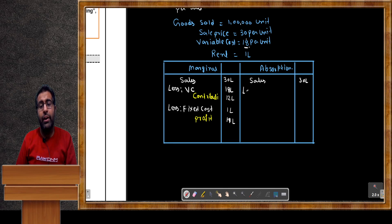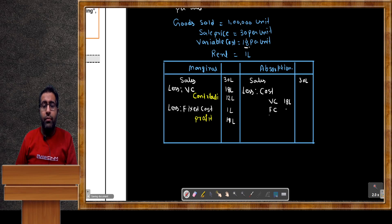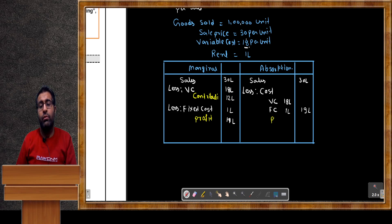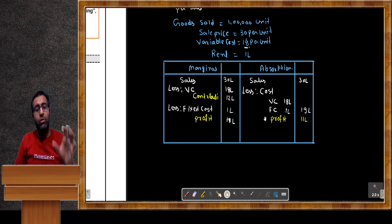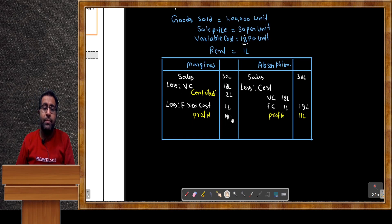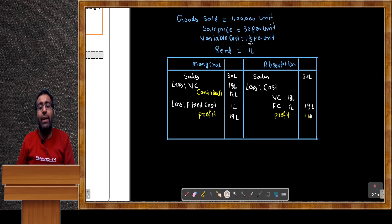Now for absorption costing: Sales = 30 lakh. From sales we deduct all types of cost — variable cost 18 lakh plus fixed cost 1 lakh = total 19 lakh. So total profit = 30 lakh minus 19 lakh = 11 lakh. It's the same. Your question is: if both profits are equal at 11 lakh, what is the basic difference?